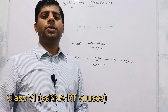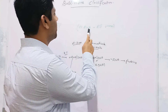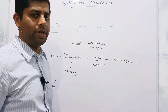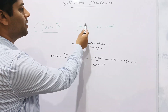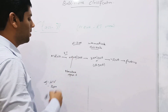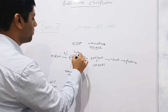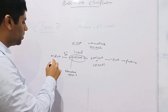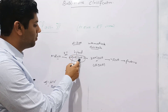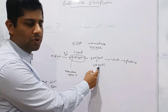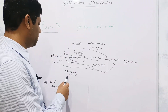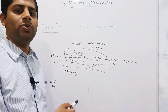The sixth class of Baltimore Classification comprises single-stranded RNA reverse transcription viruses, called so because reverse transcriptase enzyme is required in their life cycle. The single-stranded RNA serves as a template and synthesizes a complementary strand of DNA, producing an RNA-DNA hybrid. The enzyme required is reverse transcriptase, which converts RNA into DNA. Then ribonuclease enzyme removes the RNA strand while the DNA replicates another strand, producing double-stranded DNA, which is then transcribed into messenger RNA and translated into proteins. Common examples are HIV and retroviruses, which are sexually transmitted and cause AIDS.